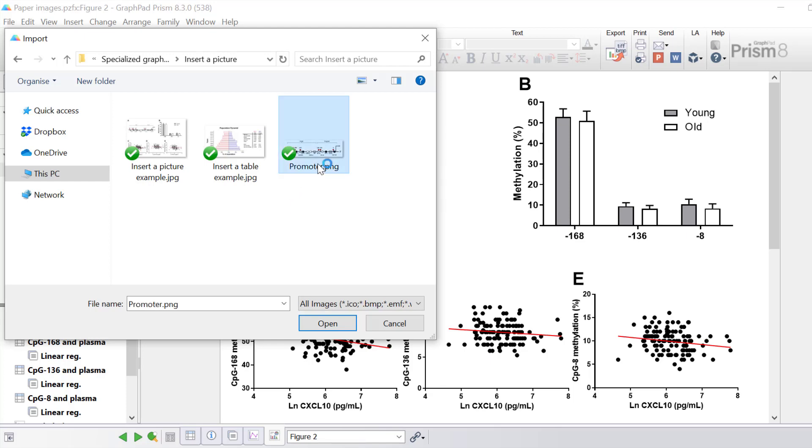I'll insert this promoter region schematic that I have prepared earlier which is a PNG file and then click open.